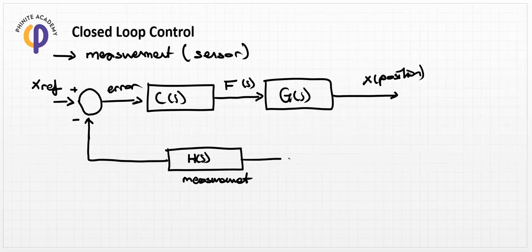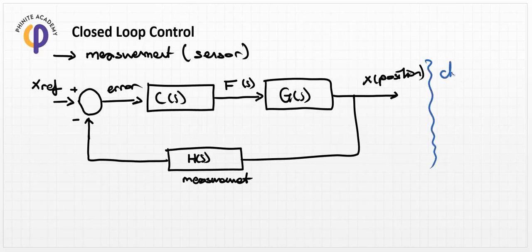If we take the position value using the sensor measurement, we can create a closed loop section. This loop is called closed loop control because the activation cannot end until the error is zero. If x_ref and x differ from each other, the error is nonzero and force continues to be applied until the error reaches zero.